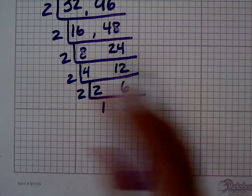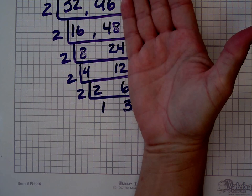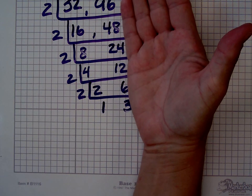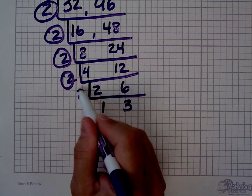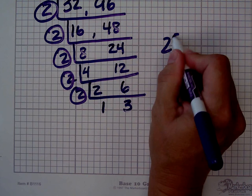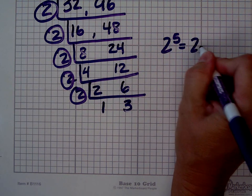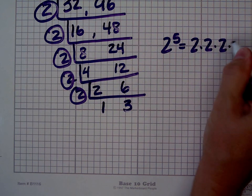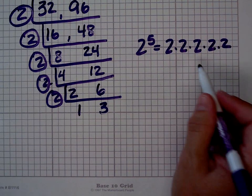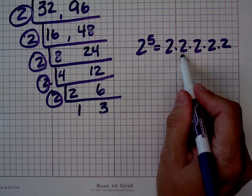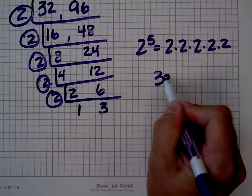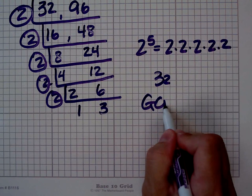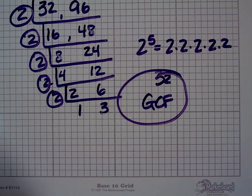Do you see what I mean when I call it the upside-down birthday cake? If you put a line here, it kind of looks like I have a birthday cake, a tiered cake upside-down. So let's take all these — one, two, three, four, five. You could write two to the fifth if you know exponents, but if you don't, just call it two times two times two times two times two. Two times two is four, four times two is eight, eight times two is sixteen, sixteen times two is thirty-two. So my greatest common factor, sometimes called GCF, is thirty-two.